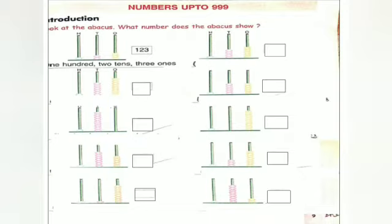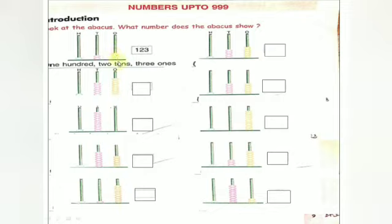Numbers up to 999. Look at the Abacus — you learnt about the Abacus in first standard, right? Now I will teach you again: what number does the Abacus show? See children — this is the 1's place, 10's place, and 100's place. In the 100's place, there is 1 bead. In the 10's place, 2 beads — so 2 tens. In the 1's place, 3 beads — so 3 ones. 100, 2 tens, 3 ones — you can write the number 123.